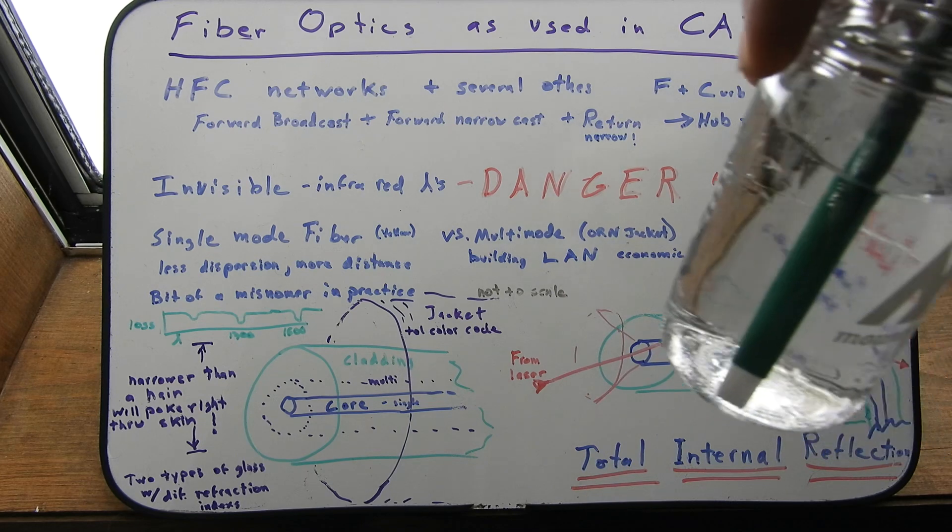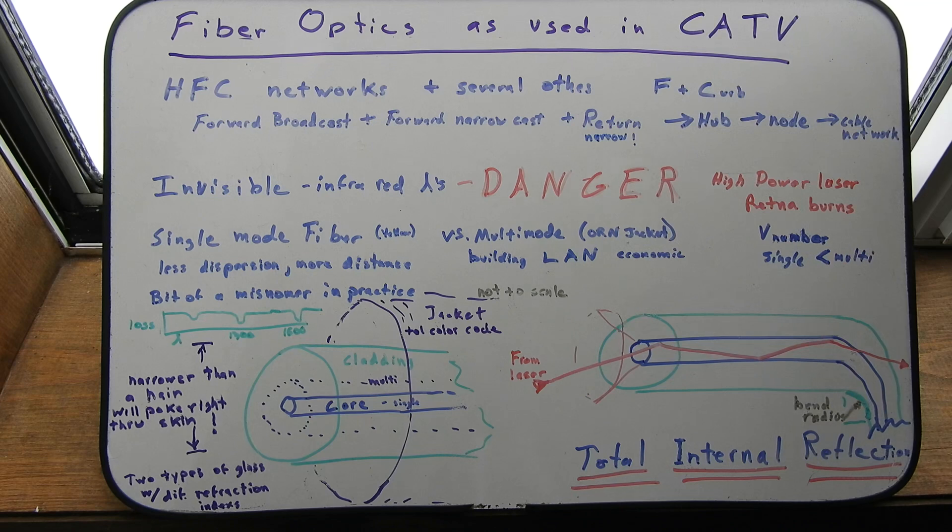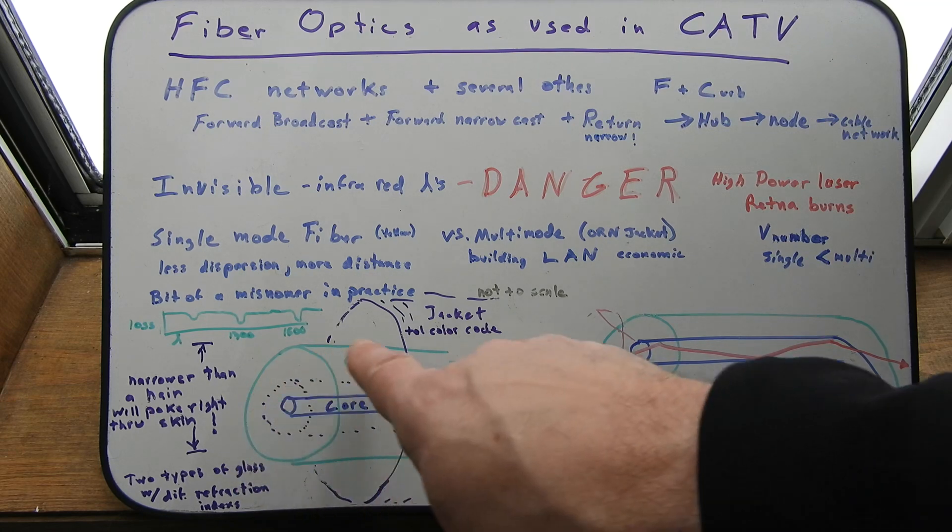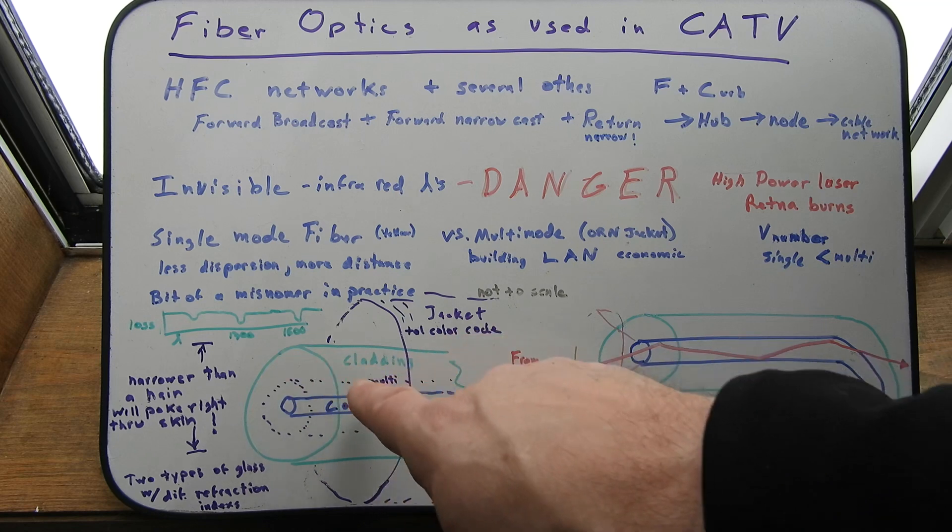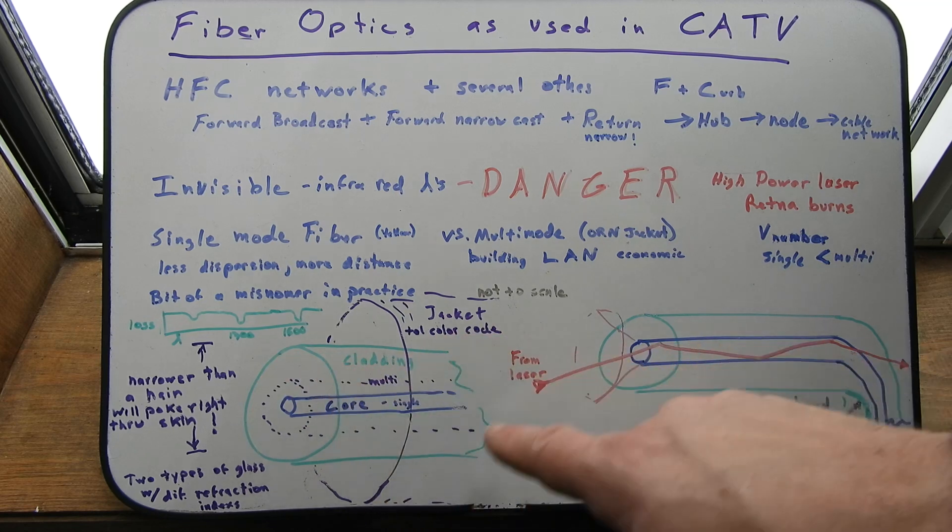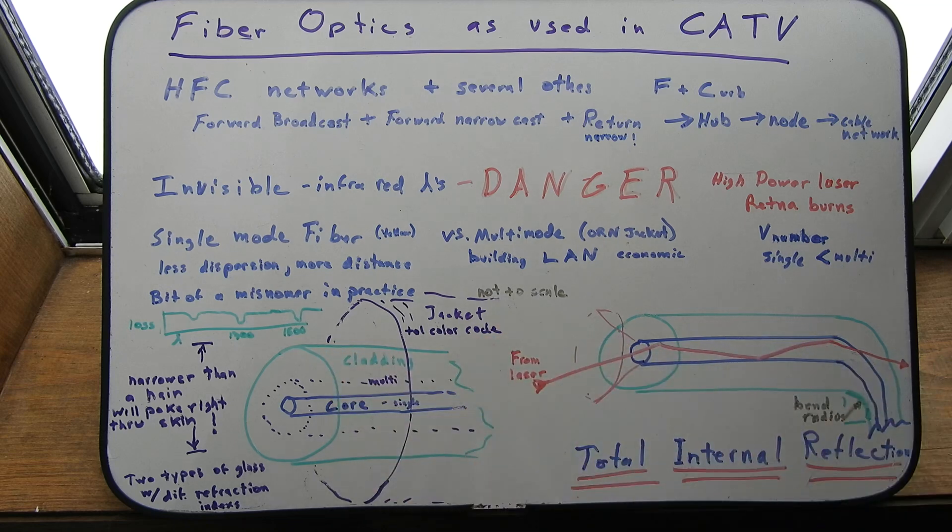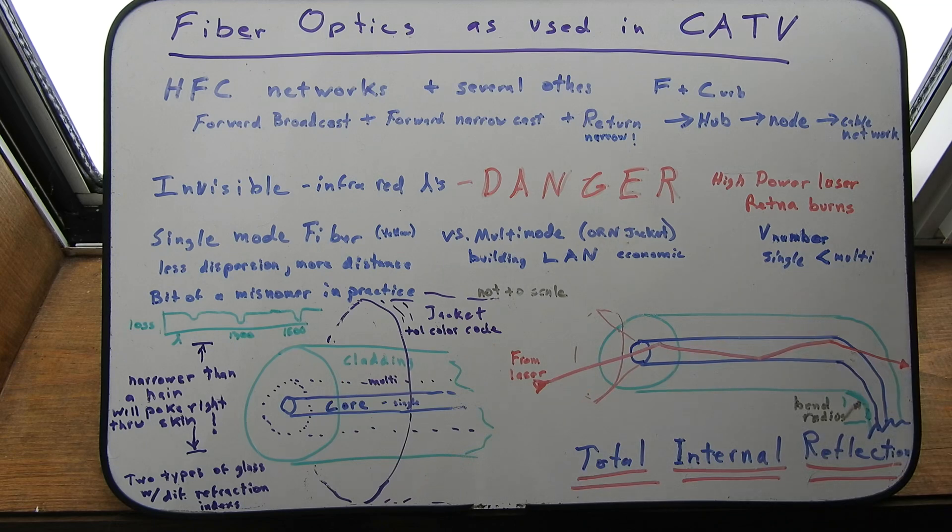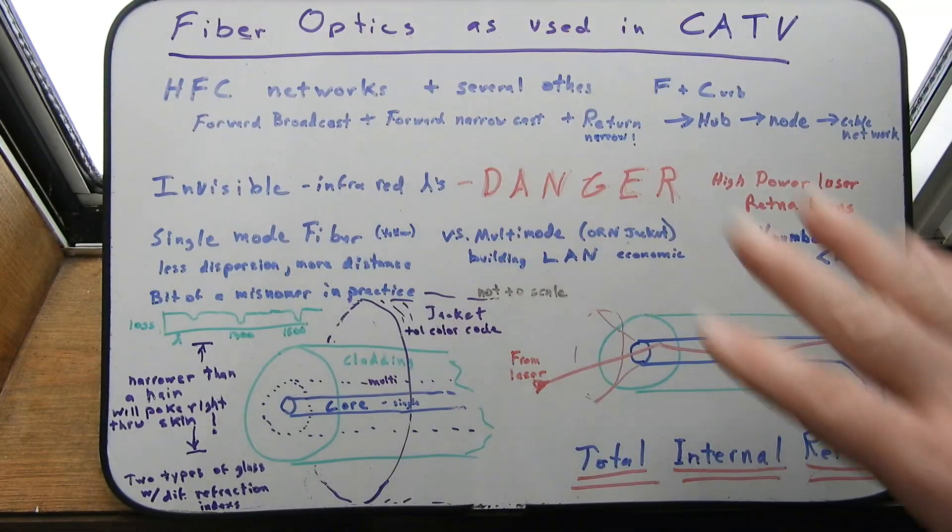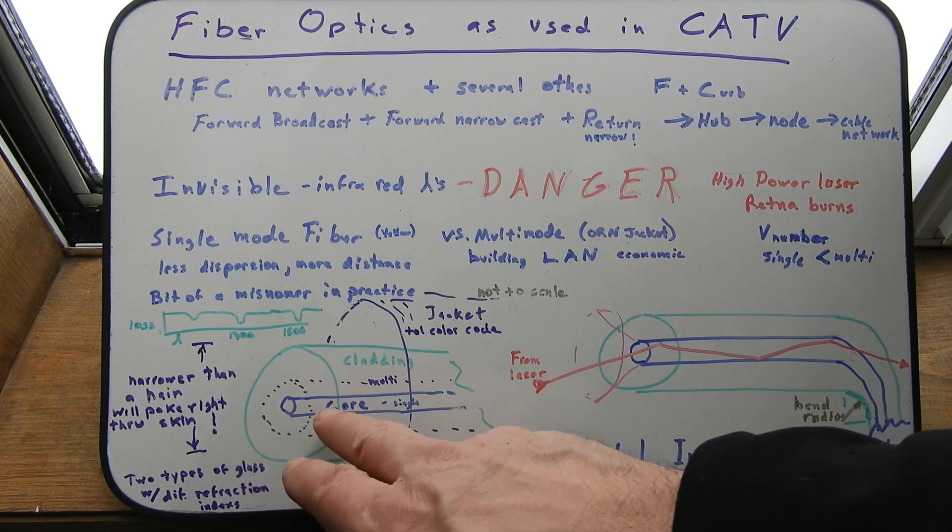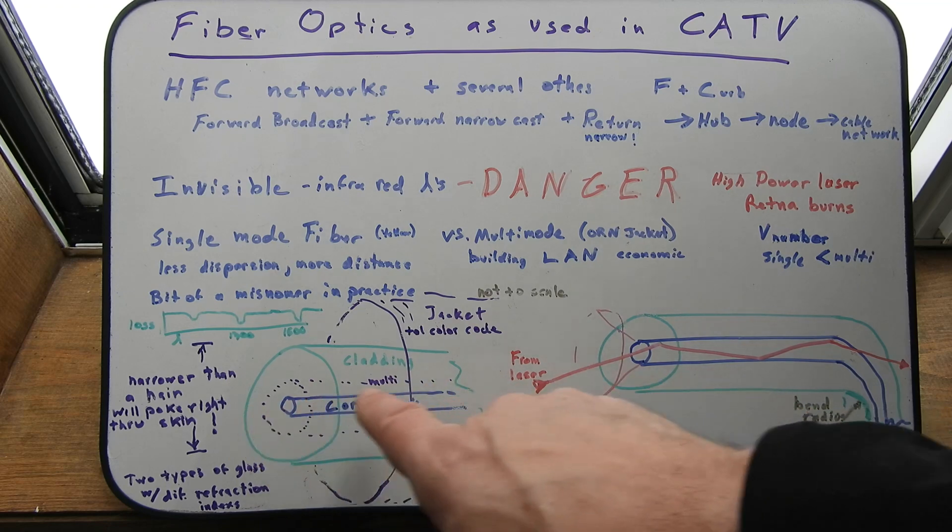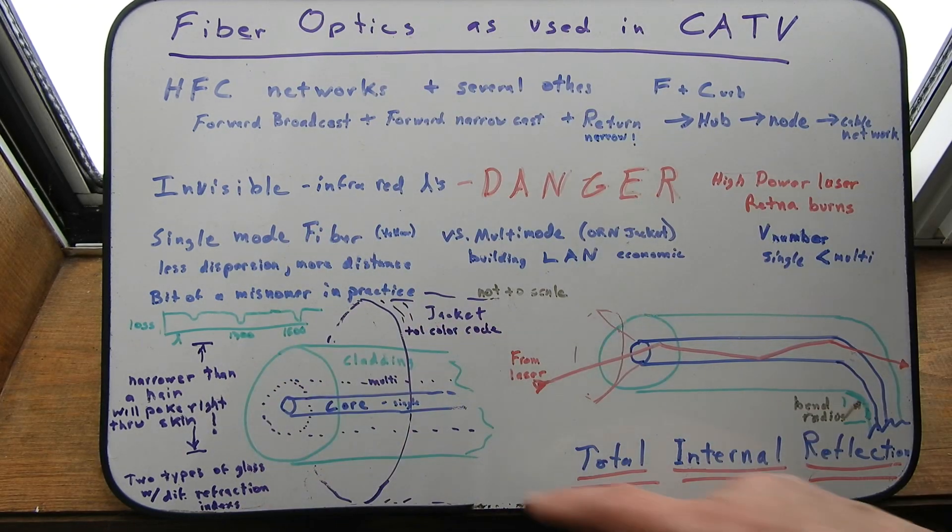So basically, I was getting back to refraction. Different glasses have different refraction rates. So they take this little tiny strand of glass and they coat it with a bigger layer of glass called cladding. And it's a glass with a different refractive index. Not by much. But the index of refraction is a little bit different. And as you know, when you look into water, at the wrong angle it'll reflect. If you look into a pond in the right conditions, you'll get a mirror-like reflection.